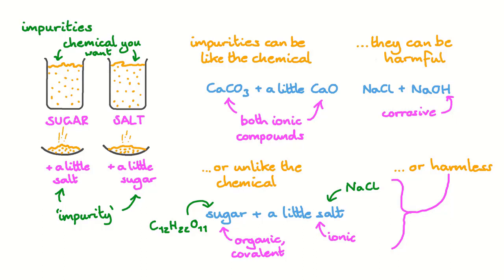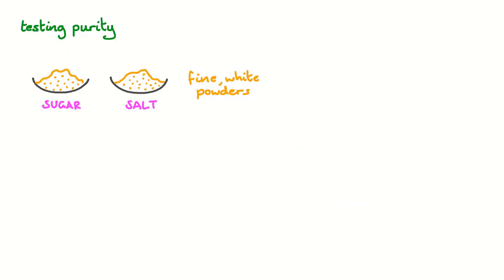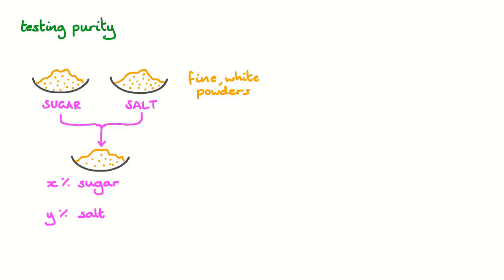So far, we've looked at describing purity and impurities. But how do we go about testing purity? Fine table salt is a white powder, and fine sugar can look very similar. Imagine that you have a really fine mixture of the two and you don't know how much is sugar and how much is salt. For solids that are very, very different chemically, like table salt and sugar, it's quite a tough job to do. But something interesting happens if chemicals are similar enough, like a mixture of table sugar and glucose, which is a molecule that can be made from sugar.